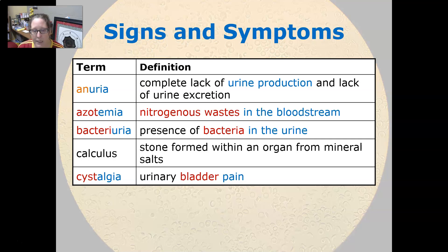Calculus is a stone that's formed within an organ from a mineral salt. Cystalgia is urinary bladder pain.